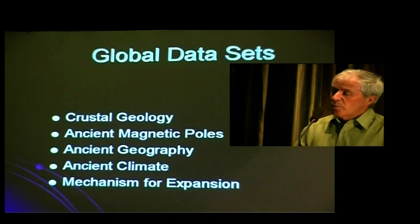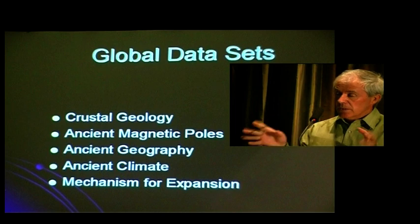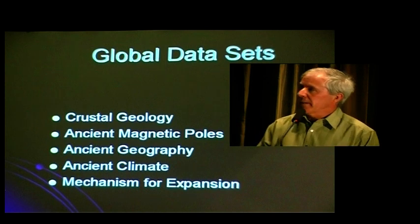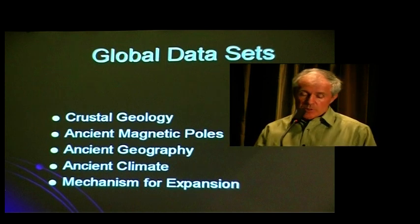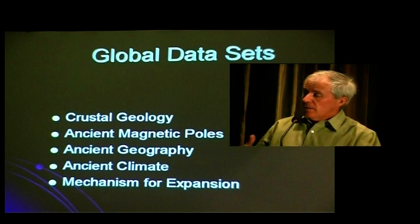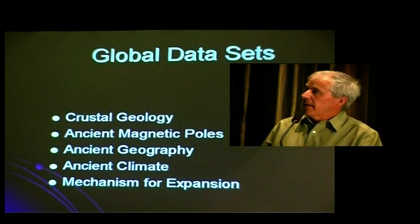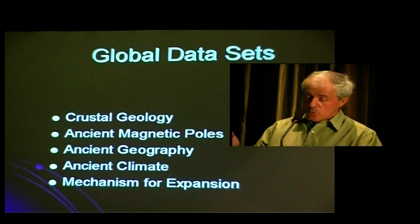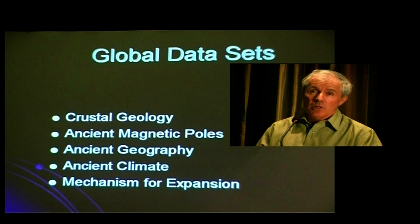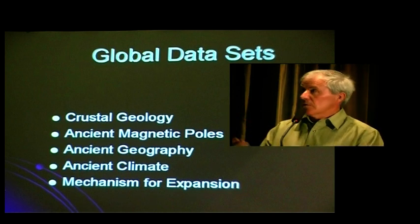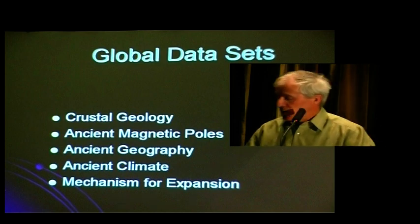I came to a critical point in my research at this time. I could see that all this information said that the Earth was expanding. But what happens to the various data sets that are now readily available - the crustal geology which we've dealt with, the ancient magnetic poles, the location of the poles, the ancient geography, the ancient climate, and also we'll then allude to mechanisms for expansion.